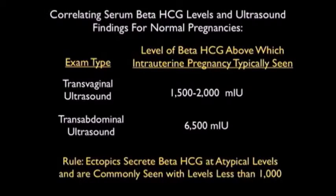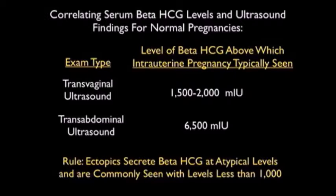Another important concept is the correlation of serum beta-HCG to the findings of a normal pregnancy. For transvaginal sonography, the discriminatory zone at which we will see findings of an intrauterine pregnancy is about 1,500 to 2,000 milli-international units. For transabdominal sonography, the discriminatory zone is about 6,500 milli-international units. This rule does not apply to ectopic pregnancies, which secrete beta-HCG at atypical levels — they can be seen with betas lower than 1,000 and as high as 30,000.